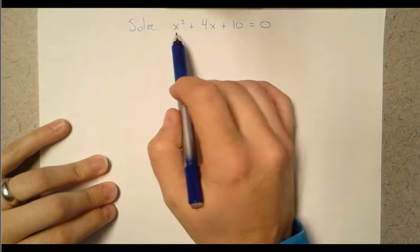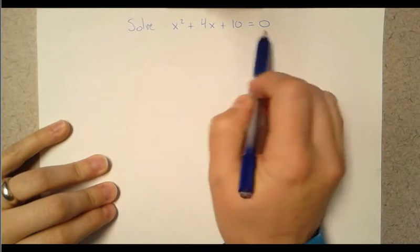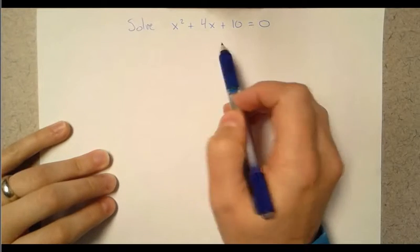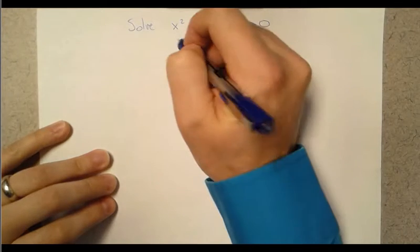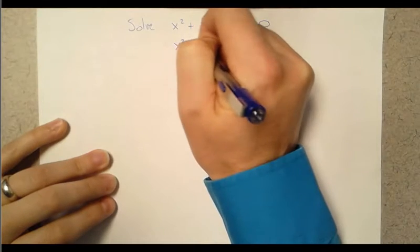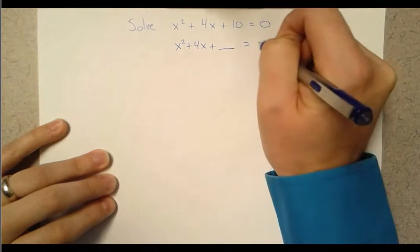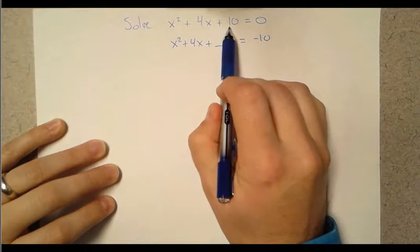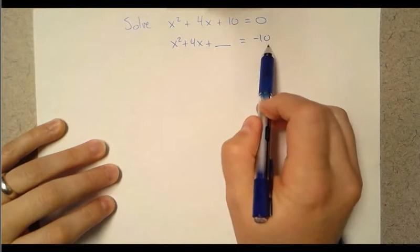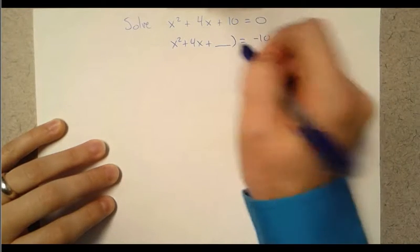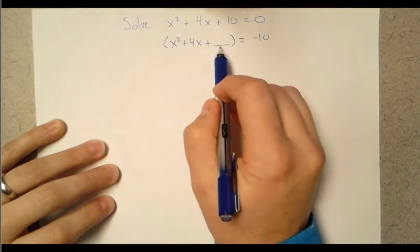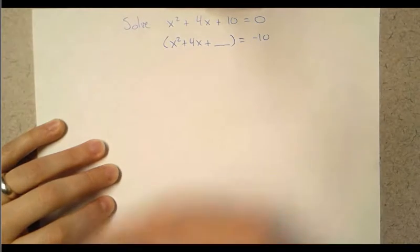So our goal again is to figure out what can we plug in for x that makes this equation true. So to do that I'm going to complete the square. So x squared plus 4x plus something equals negative 10. Now what did I just do? So I subtracted 10 over to the other side just to get it ready. And I like to leave a space right here to kind of remind me what am I doing.